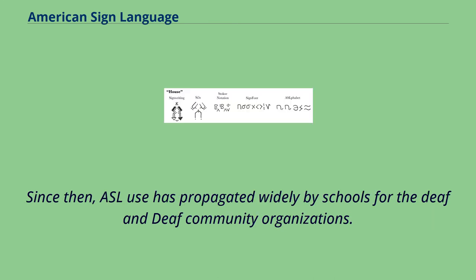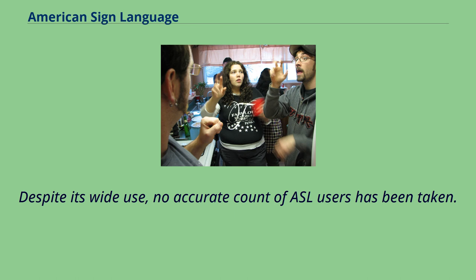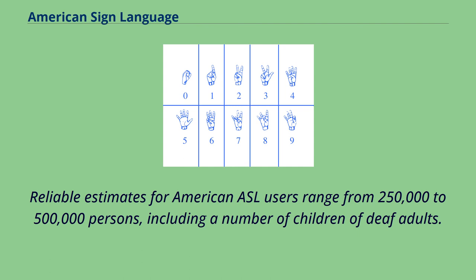Since then, ASL use has propagated widely by schools for the deaf and deaf community organizations. Despite its wide use, no accurate count of ASL users has been taken. Reliable estimates for American ASL users range from 250,000 to 500,000 persons, including a number of children of deaf adults.